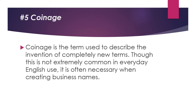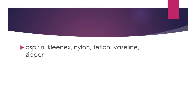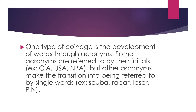Number 5 is Coinage. Coinage is a term used to describe the invention of a completely new term. Though this is not extremely common in everyday English use, it is often necessary when creating business names. One type of coinage is the development of words through acronyms. Some acronyms are referred to by their initials, like CIA, USA, NBA, and FBI. But other acronyms make the transition into being referred to as a single word — examples include SCUBA, radar, laser, and PIN.